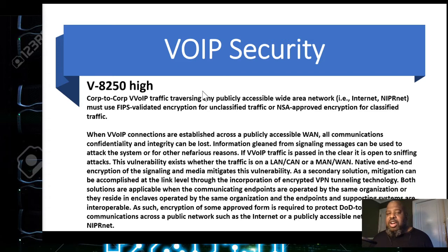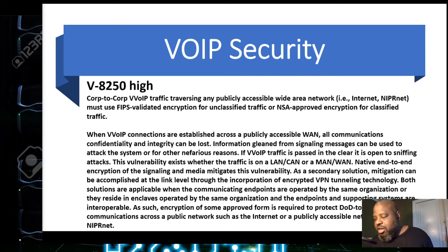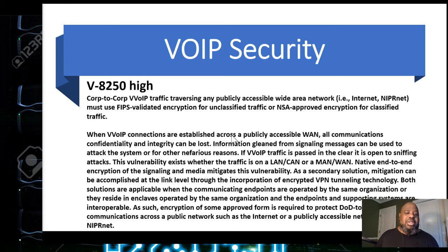Let's look over a couple of the high checks. VoIP traffic traversing over a publicly accessible wide area network must use FIPS-validated encryption for unclassified traffic, or NSA-approved encryption for classified traffic. FIPS means that the encryption has been submitted to the government and signed off on to make sure it was actually working properly. When a connection is established across the publicly accessible WAN and all communication confidentiality can be lost, information gleaned from signaling may be used in message attacks against the system or for other nefarious reasons.